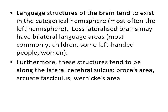These structures tend to be found along the lateral cerebral sulcus, and the three main structures are Broca's area, the arcuate fasciculus, and Wernicke's area — with the fasciculus basically being the pathway that joins Broca's and Wernicke's areas. We'll discuss each of these two areas in a bit more detail.